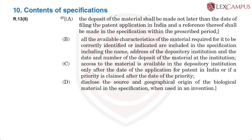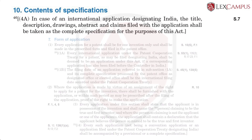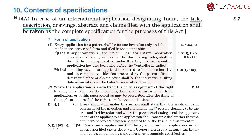The applicant also has to disclose the source and geographical origin of the biological material in the specification when used in an invention. Section 10(4)(a) tells us that in the case of an international application designating India — which includes a convention application and a PCT — the title, description, drawings if any, abstract, and claims filed with the application shall be taken as a complete specification for the purposes of this Act.